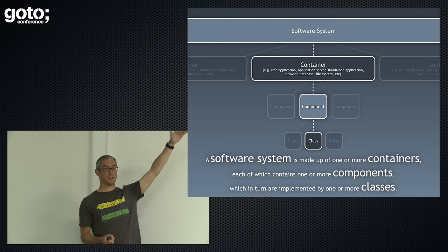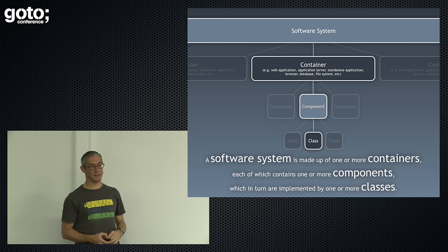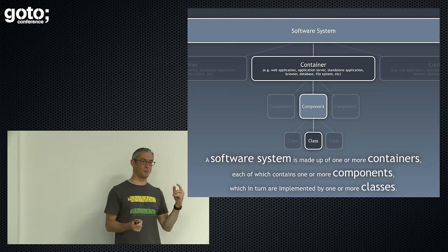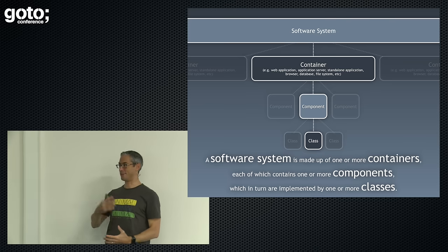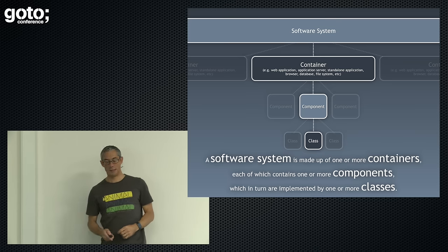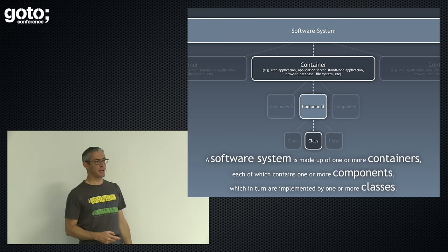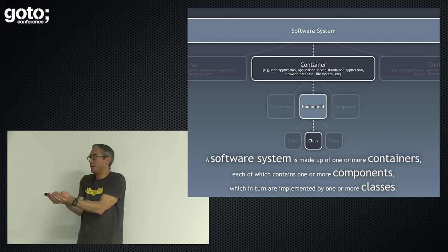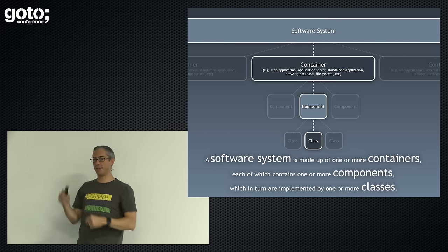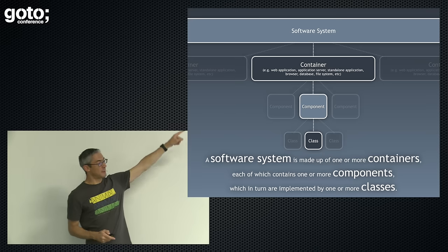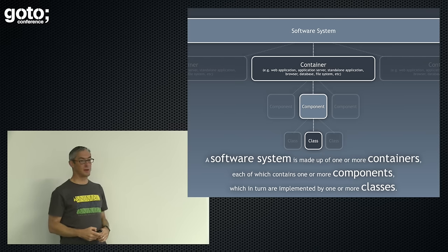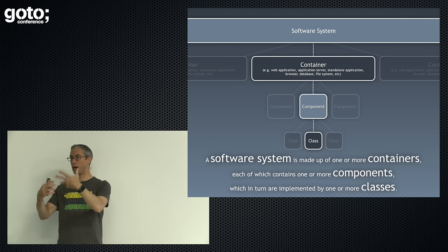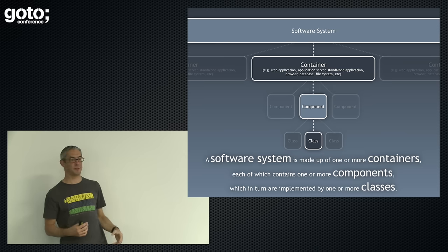For me, very simply: when I'm discussing a software system, that software system is made up of containers. A container is just something that stores data or runs code — in real terms it's a web app, a mobile app, a standalone app, a Windows service, a database schema, and so on. If you open up the containers, they are made up of components. I want to use the word 'component' to mean something running inside a runtime environment — a nice, cohesive grouping of stuff with a clean interface. And because I mostly deal with Java and C#, my components are built from classes. That's it.